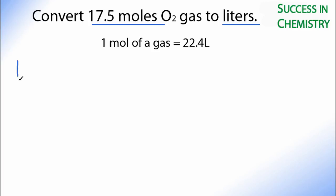So I'll start out and write 17.5 moles, and I want to end up with liters. So I'll draw my line across here, and like this. This is using the factor label method.